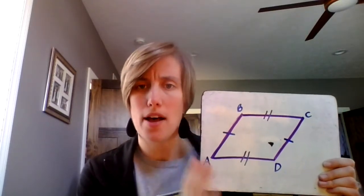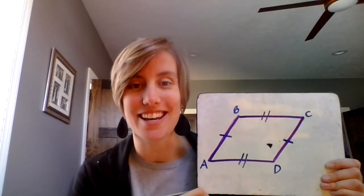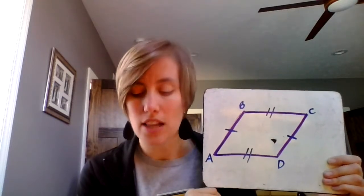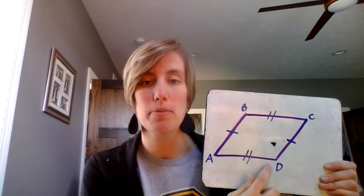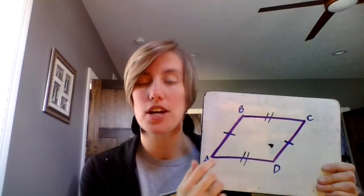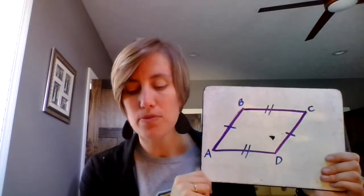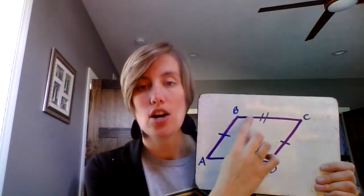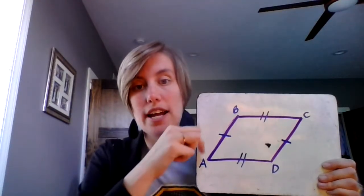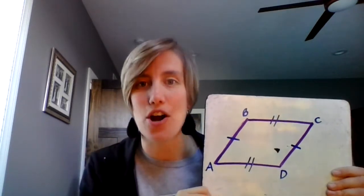When you have a diagram like this — a parallelogram or a quadrilateral — if two line segments appear to be parallel, assume that they are. Line AD and line BC are parallel and they are the same length. Line BA and line CD are parallel and they are the same length.